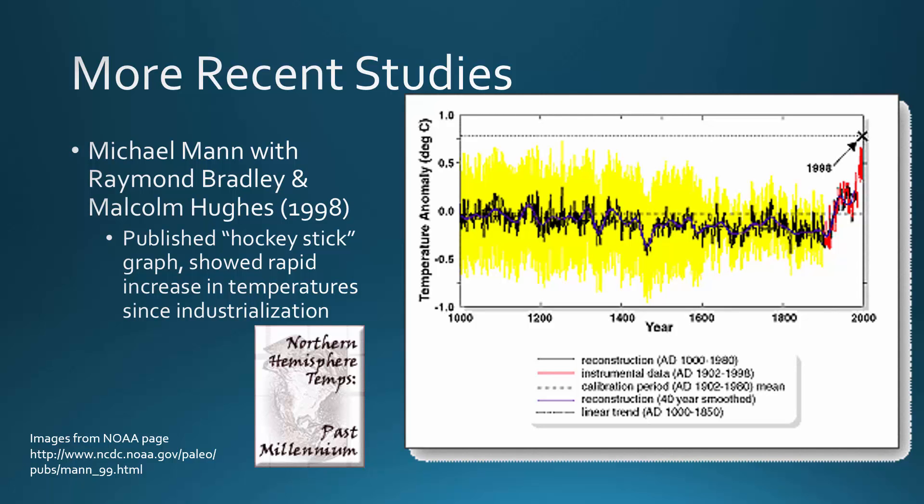In a more recent study, three scientists worked together. Their names are Michael Mann, Raymond Bradley, and Malcolm Hughes. In 1998, they published this study called Northern Hemisphere Temps, Past Millennium.